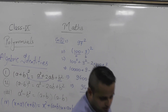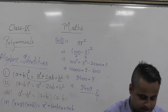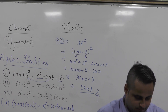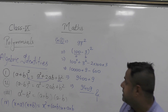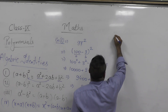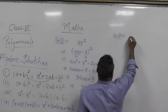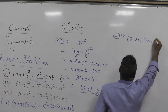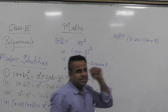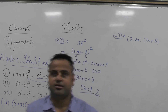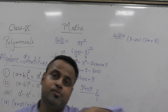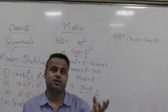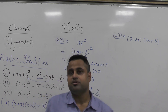Now for the third identity A square minus B square, I am taking an example. It is given in NCRT. For the third identity I am taking 3 minus 2x, and 2x plus 3. Now it does not matter that the numbers are in different order in a subtraction. The sequence is important when the number is in subtraction.